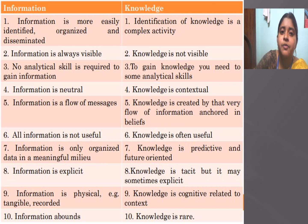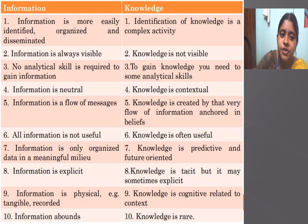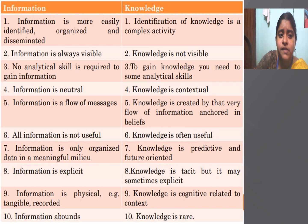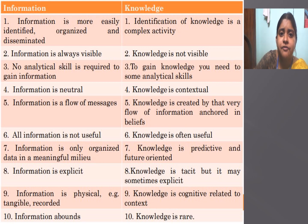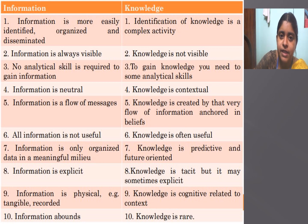Information is only organized data in a meaningful form, but knowledge is predictive and future-oriented. Information is explicit while knowledge is tacit. Information abounds and is read. These are the differences between information and knowledge.